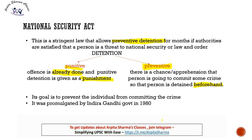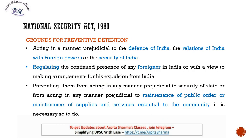The National Security Act was promulgated in 1980 by Indira Gandhi's government. It is used for preventive detention. The grounds under which a person can be kept in preventive detention are: the first ground is acting in a manner prejudicial to the defense of India, relations of India with foreign powers, and security of India — i.e., if a person's actions are seen as dangerous to India's defense, foreign relations, or security, NSA can be invoked to place them in preventive detention.